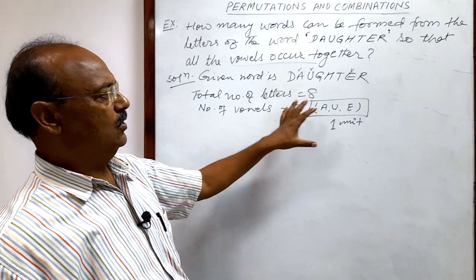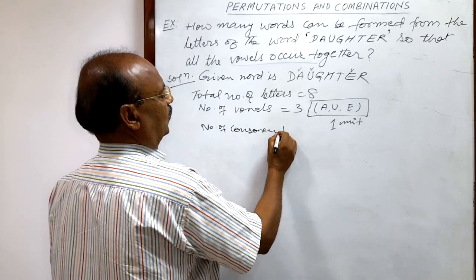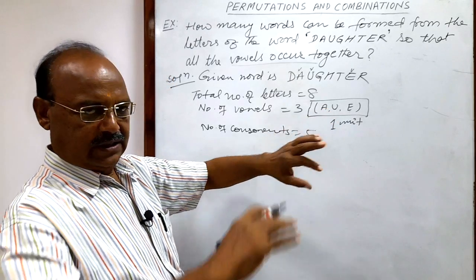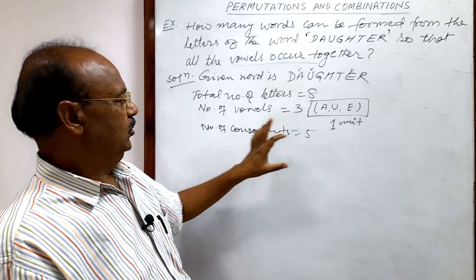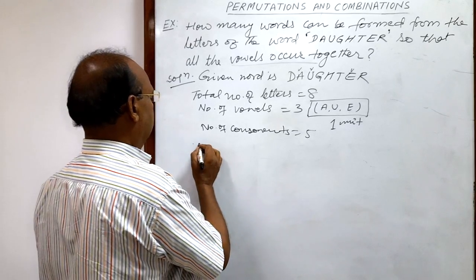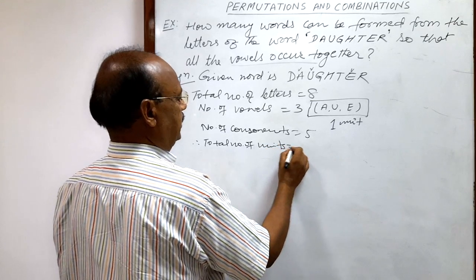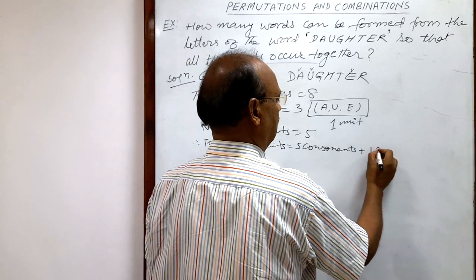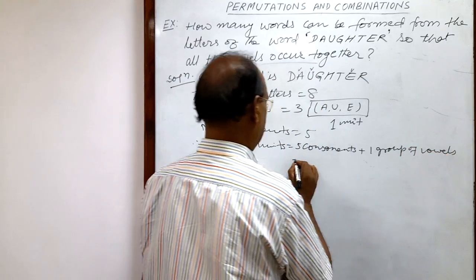And number of consonants is 5 here. Number of consonants is equal to 5. So these are 5 units, and this vowels have to come together, have to remain always together, so treated as 1 unit. So total number of units is 5 consonants plus 1 group of vowels is equal to 6.